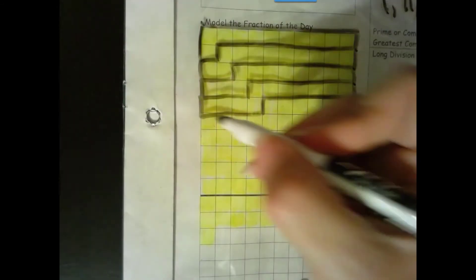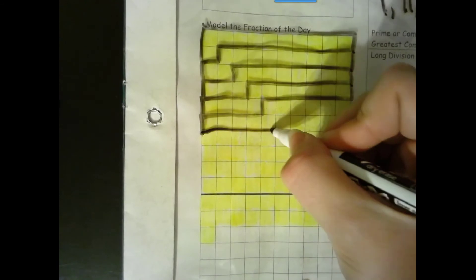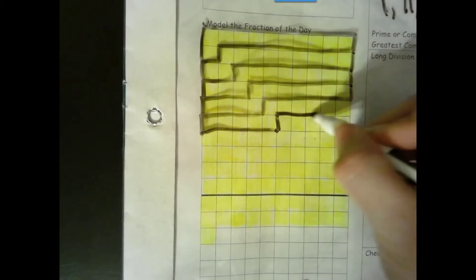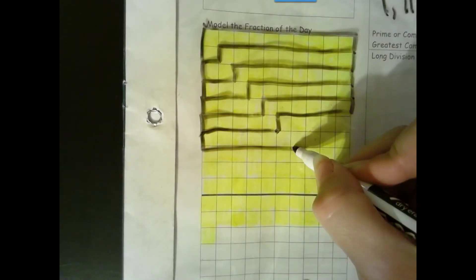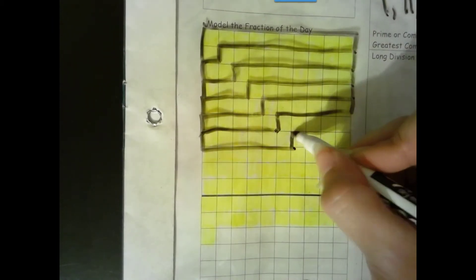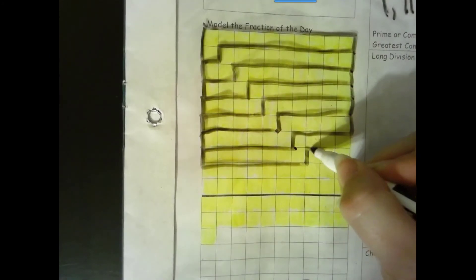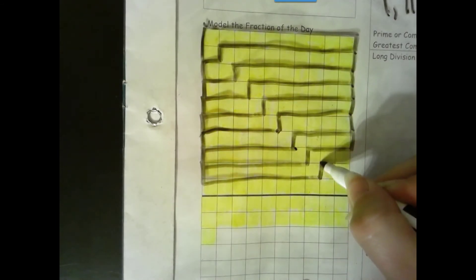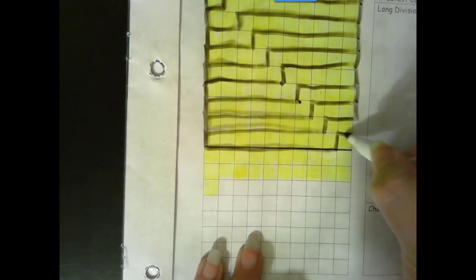So here I have 6 plus 5 is 11. 5 plus 6 is 11, 5 plus 6 is 11, 4 plus 7 is 11, 4 plus 3 plus 8 is 11.